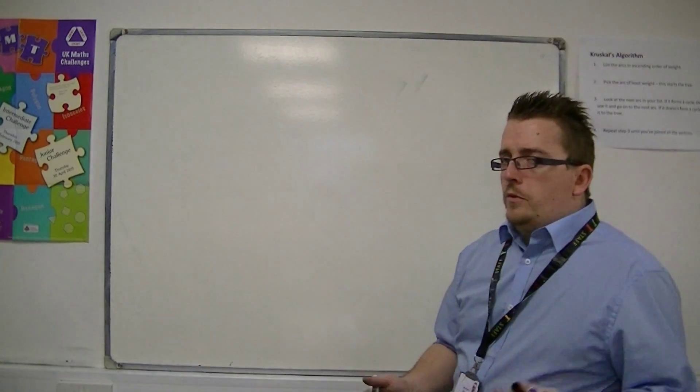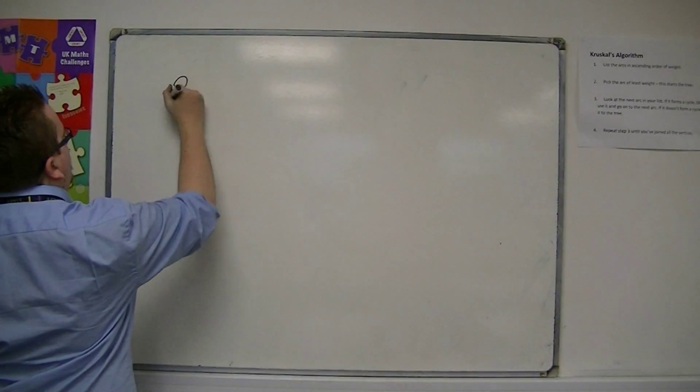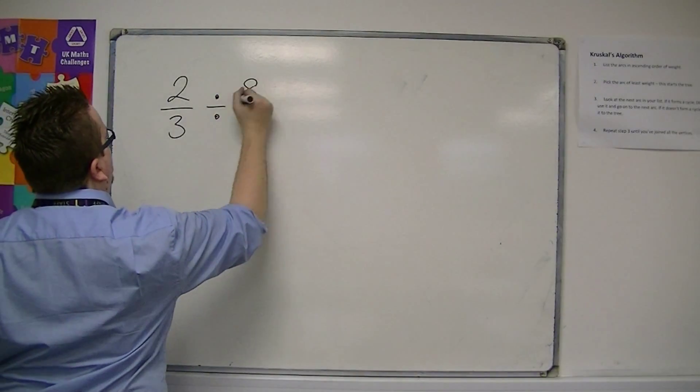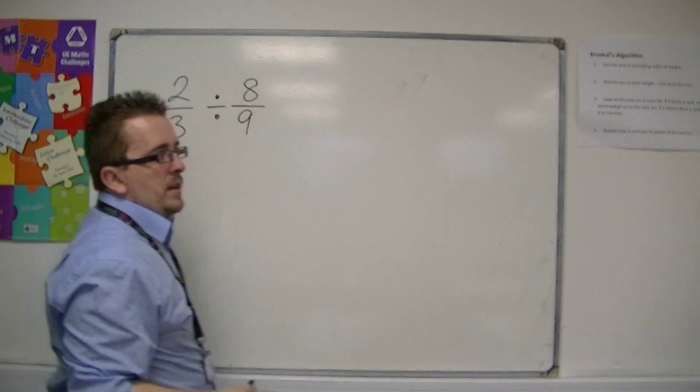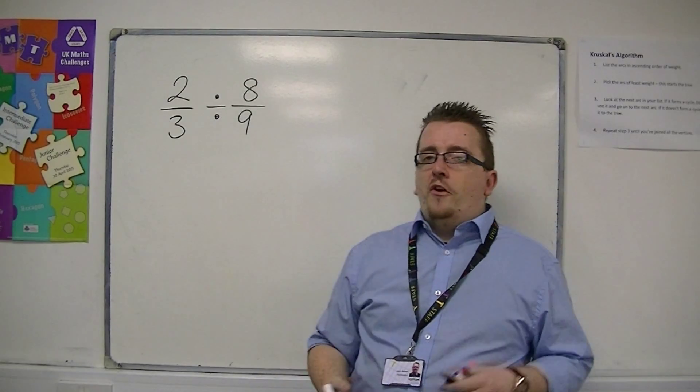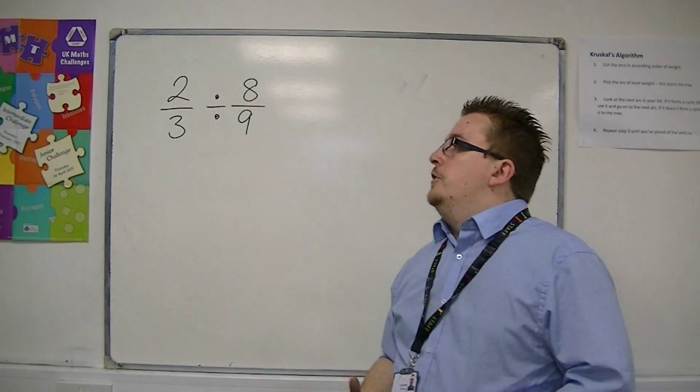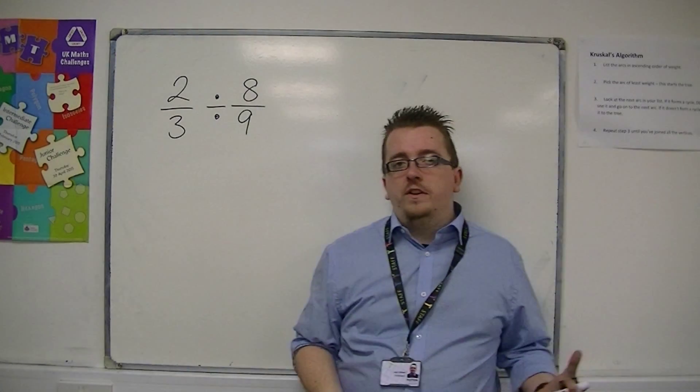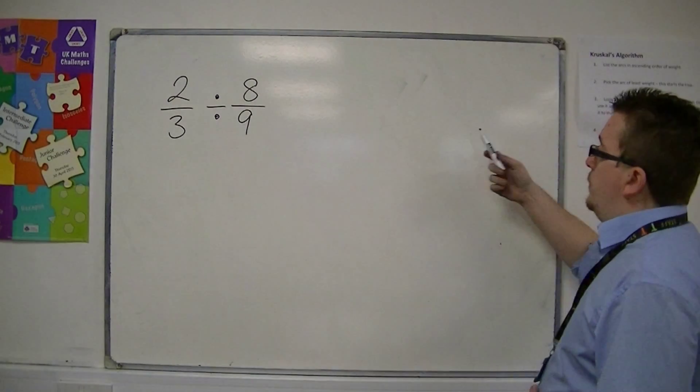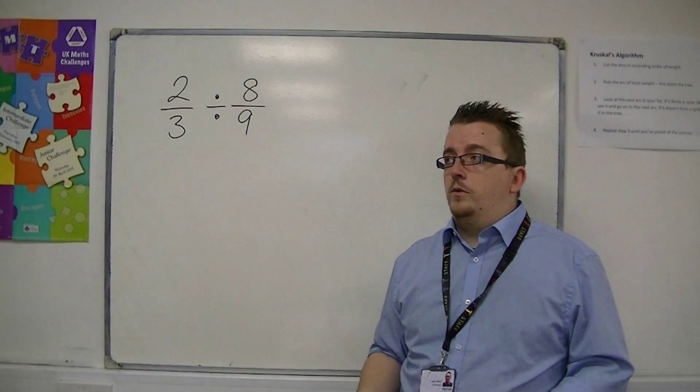Going through an example, we might be looking at something like 2/3 divided by 8/9. Now, if you had a problem like this, it's not immediately obvious as to how you would work with it. You're trying to find how many 8/9 go into 2/3, which is quite challenging. I could try and do it pictorially, but it's also quite difficult to see.